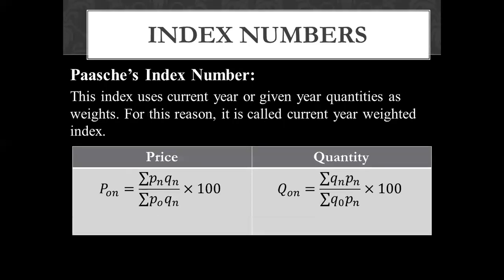Next, what do we do in Paasche's index number? In Paasche's index number, we use the current year quantities as weights. Here we have studied the simple formula. We will multiply the denominator with the current year quantity. In this case, we call it the current year weighted index number.